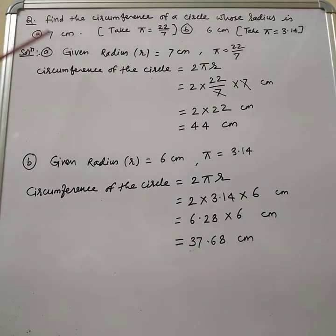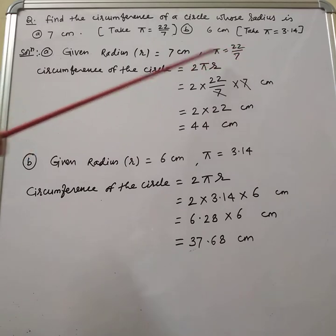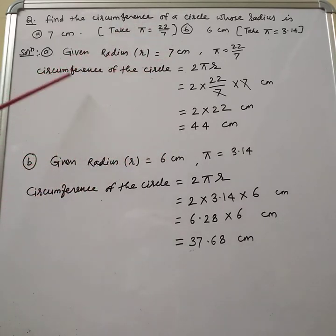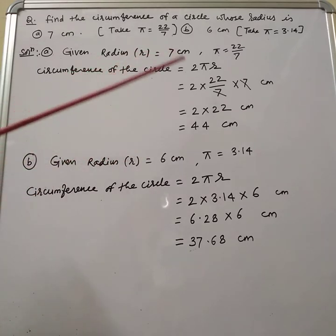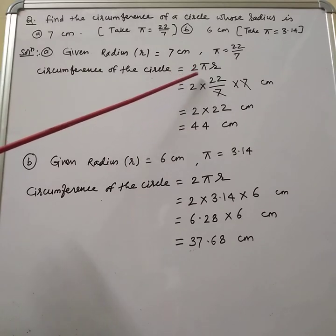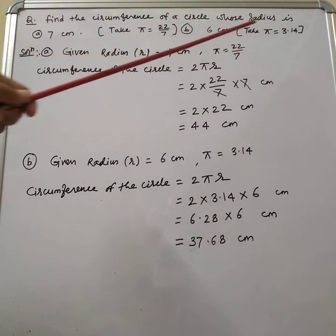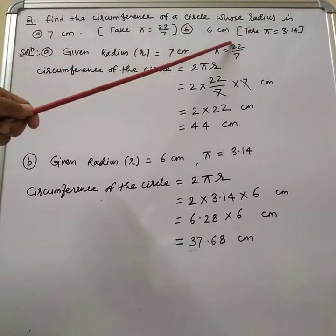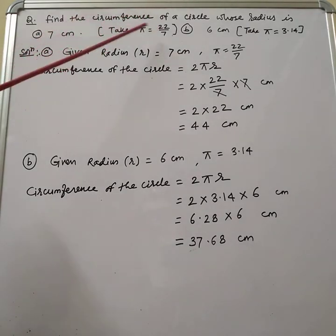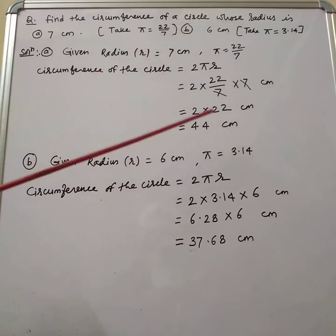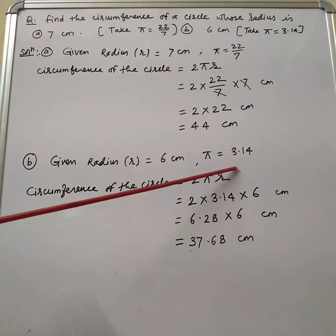Solution A: given that the radius of a circle is 7 cm and the value of pi is 22 by 7. We know that the circumference of a circle is equal to 2 pi r. The circumference is the boundary or perimeter of the circle, calculated using the formula 2 pi r. The value of pi is always constant — either 22 by 7 or 3.14. If it is not specified, you may use either. If it is given to take 22 by 7, then we take 22 by 7; if 3.14 is specified, then we take 3.14.